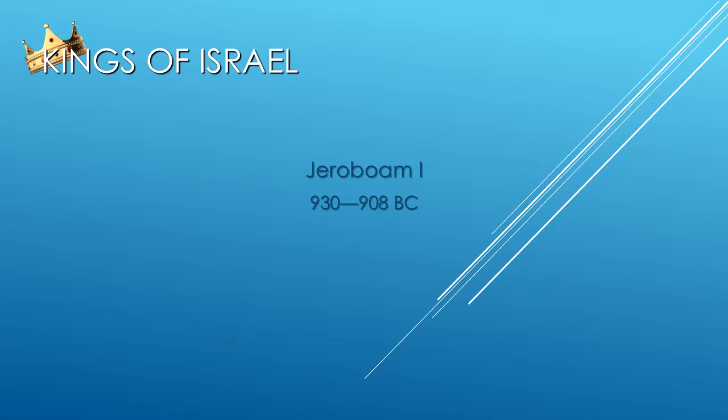After one video of introduction and background information, then another video discussing the other gods problem, we're finally ready to begin our journey through the divided kingdom. Starting in Israel with Jeroboam, we'll work our way through all the kings of the northern kingdom, those ten tribes that seceded from the union after Solomon died. Then we'll come back to 930 BC and start all over again in Judah, going through the kings of the southern kingdom.